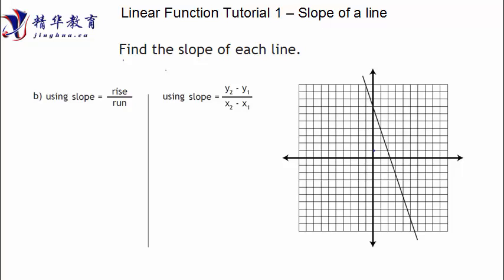All right, so for now let's do the linear function part. Linear function is the easiest function ever. It only has two things: one is called slope, and the other is called y-intercept. And that's it. We're going to talk about these things in the next several videos. In this first part, we're going to talk about the slope of the line.